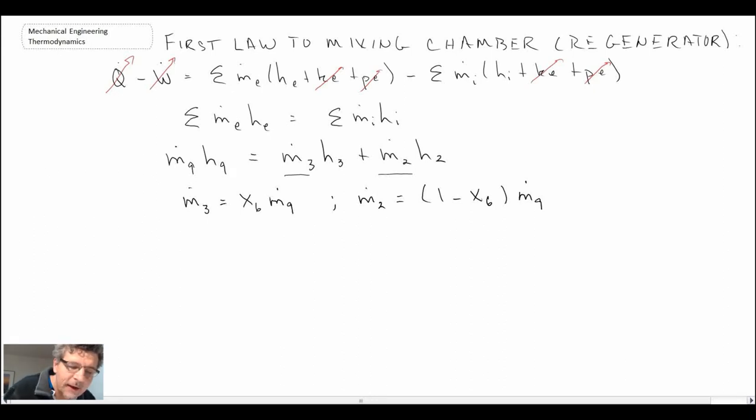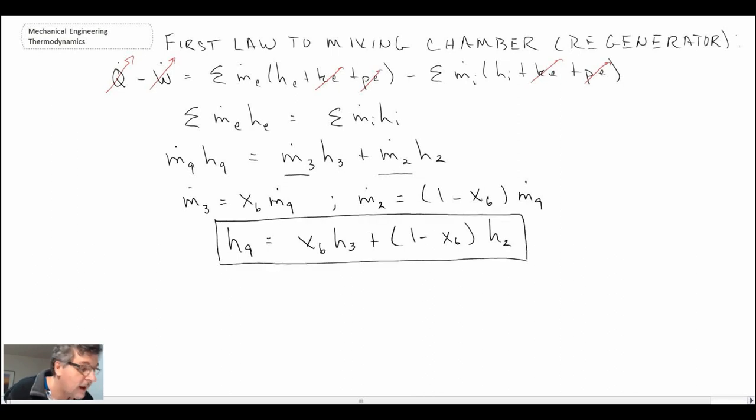So that enables us to determine the mass flow rate for 3 and 2. We can then plug in for the enthalpy at state 9 and obtain the following. And that's an equation that we can use then for our mixing chamber or regenerator and determining the enthalpy at state 9.